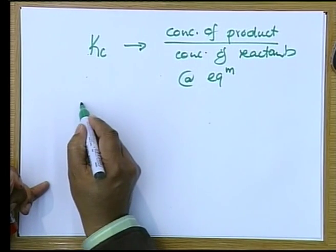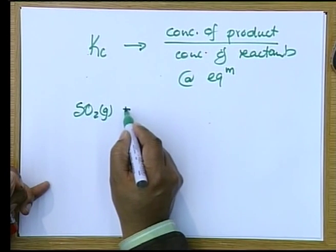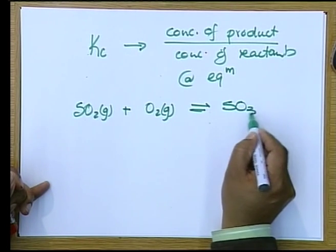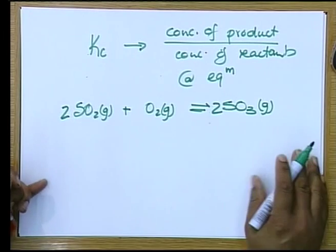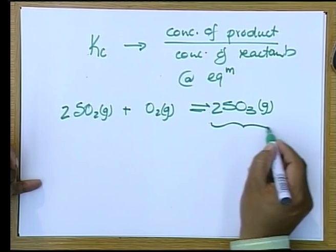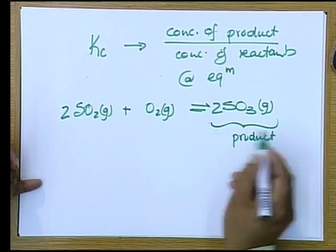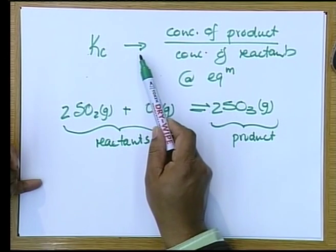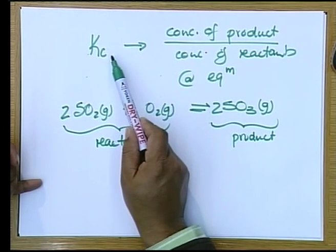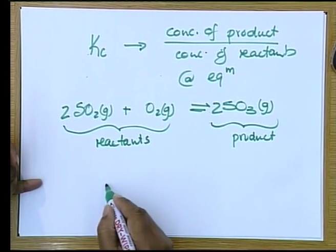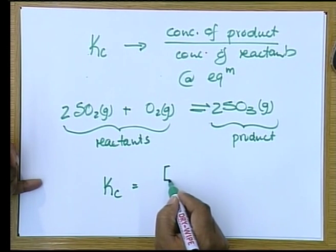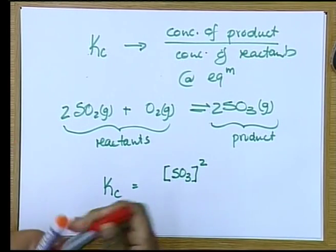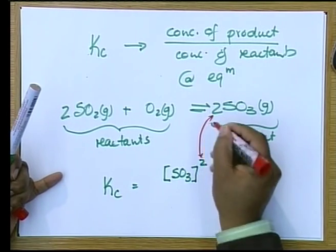If I take an equation — sulfur dioxide gas plus oxygen gas — it's a reversible reaction to give sulfur trioxide gas, and we just balance it quickly. This is the product and those are my reactants. Kc is equal to the concentration of sulfur trioxide to the power 2, because the coefficient of sulfur trioxide in my equation is 2.